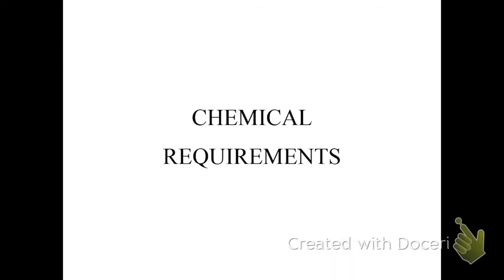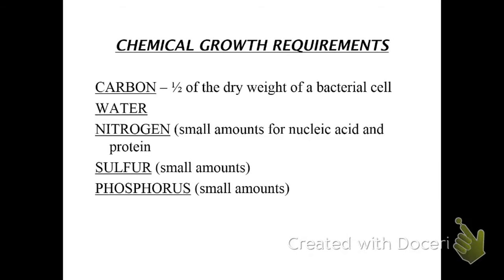We talked about the physical requirements. They were temperature, pH, and water. Now, for the chemical requirements. We have carbon, water, nitrogen, sulfur, and phosphorus. Carbon, if you took out the water in a bacteria, over half of what's left, so the dry weight, is carbon. And the same thing with you, of your dry weight, your elements, over half of you is carbon.